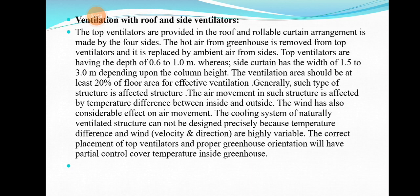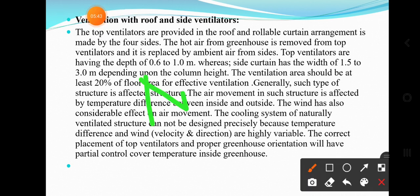Air movement in such structures is affected by the temperature difference between inside and outside. Wind also has a considerable effect on air movement. The cooling system of a naturally ventilated structure cannot be designed precisely because temperature difference and wind are highly variable. The correct placement of top ventilators and proper greenhouse orientation — at least north or south — should partially control the temperature inside the greenhouse.